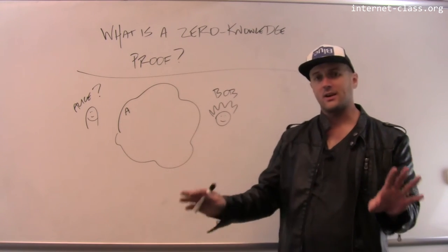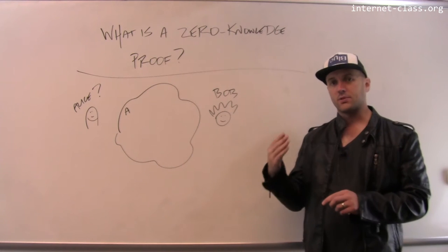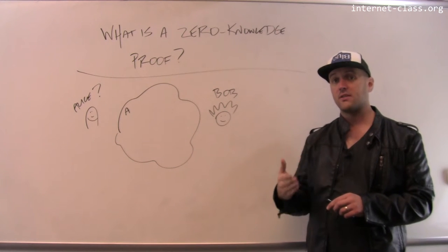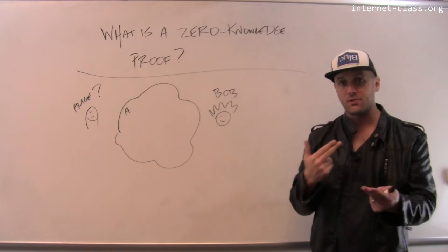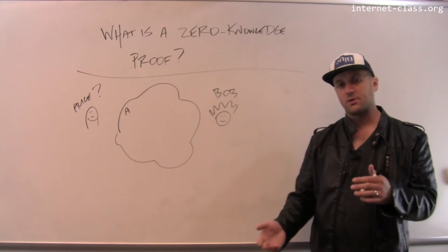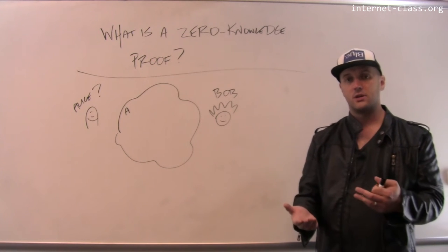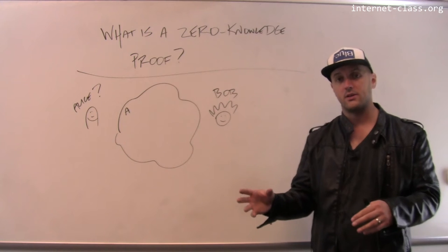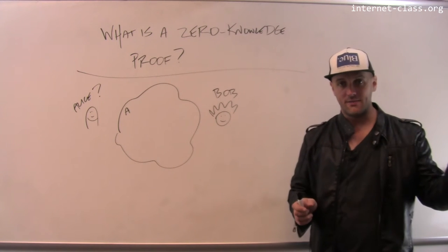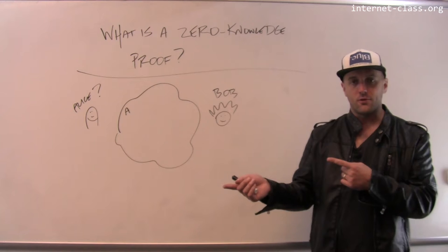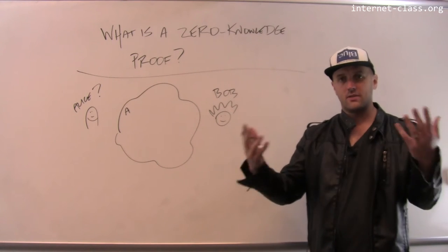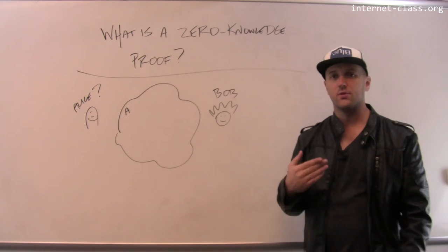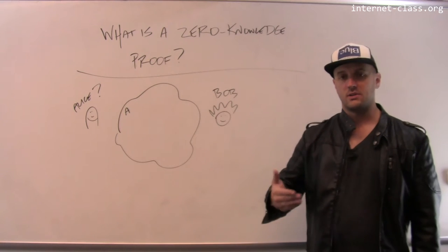So this is very different than proving a theorem or something like that. Zero knowledge proofs emerged out of research into what are known as interactive proof systems. An interactive proof is a process by which two parties, typically known as the prover and the verifier, engage in some sort of back and forth process by which they come to some conclusion. So the prover either proves to the verifier something or does not.